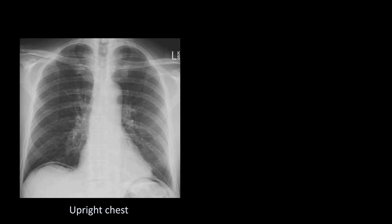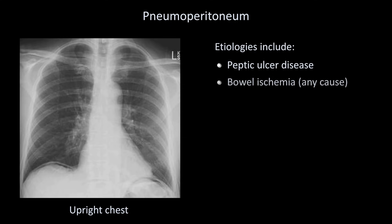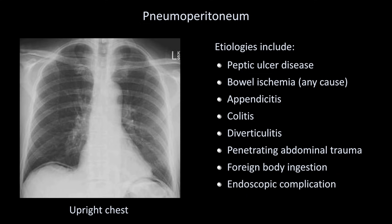Moving from abnormalities of intraluminal gas to those of extraluminal gas — there are two main ones to worry about. The first is best seen on an upright chest film. We can see free air collecting immediately under the diaphragm, indicating pneumoperitoneum. The list of potential etiologies is very long, but the main considerations include peptic ulcer disease, bowel ischemia from any cause, appendicitis, colitis, perforation of a diverticulum in diverticulitis, penetrating abdominal wall trauma such as a stab or gunshot wound, ingestion of a foreign body resulting in bowel perforation, and as a complication from endoscopy. Pneumoperitoneum can also be observed after laparoscopic or open abdominal surgery.